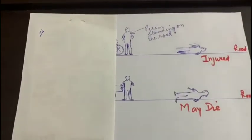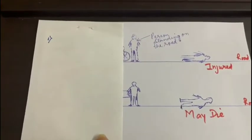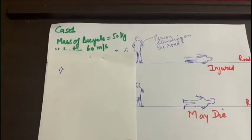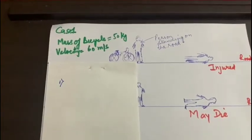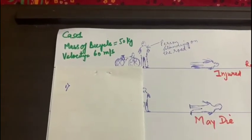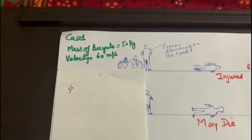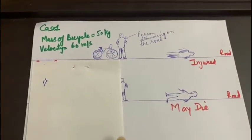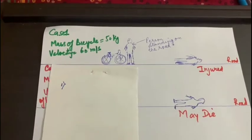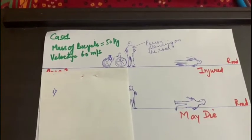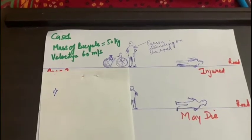So let's imagine a person standing on a road. And suddenly what happens? A bicycle with mass 50 kg moving with the velocity 60 meter per second hits the person. And naturally the person will get some injuries.